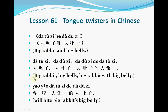大兔子和大肚子，大兔子，大肚子，大肚子的大兔子要咬大兔子的大肚子。 大 means big, 兔子 means rabbit, 和 means and, 肚子 means belly, 咬 means bite. Let's try this again: 大兔子和大肚子，大兔子，大肚子，大肚子的大兔子咬大肚子的大肚子.